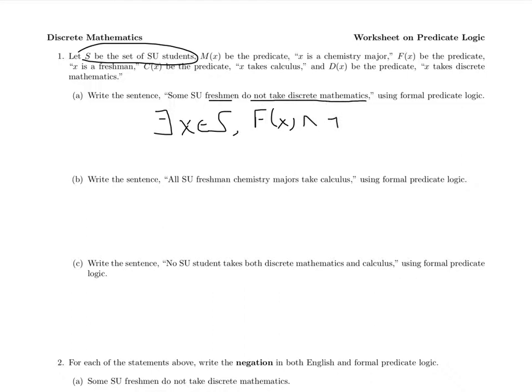So and not D(x). So even though in English we can say SU freshman, in terms of our predicates we say there is an SU student who is a freshman and does whatever. So even though the word and isn't in there, it isn't in the implication.